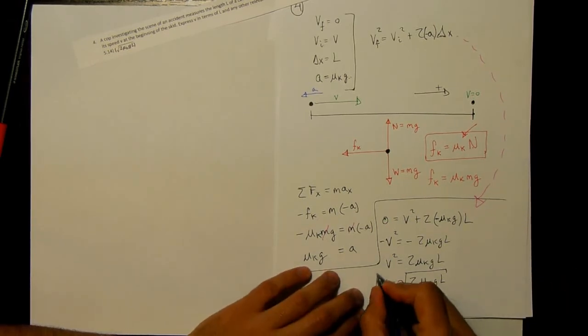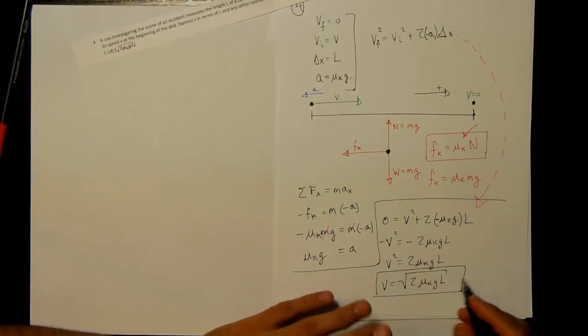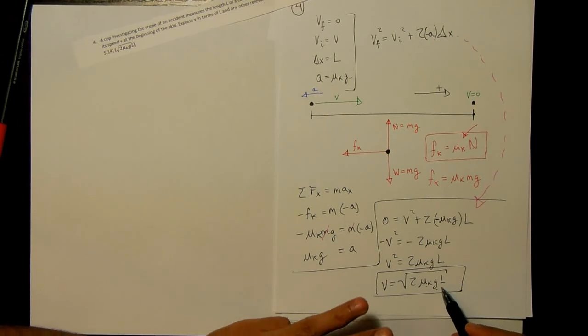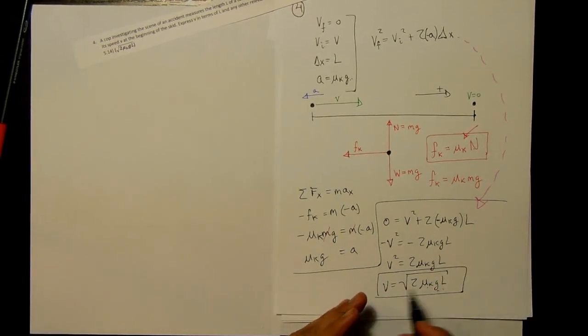All right. So this is our answer. And everything is in terms of symbols, coefficient of friction, the acceleration due to gravity, and how far it takes to stop the car, the skid mark in this case. And we saw that the mass is cancelled out. Awesome.